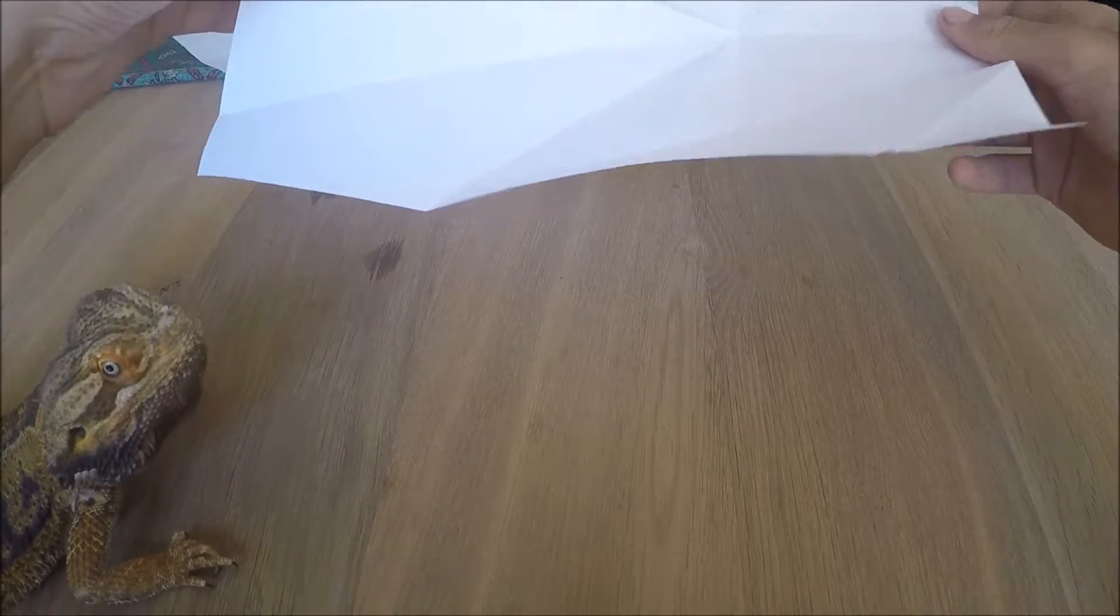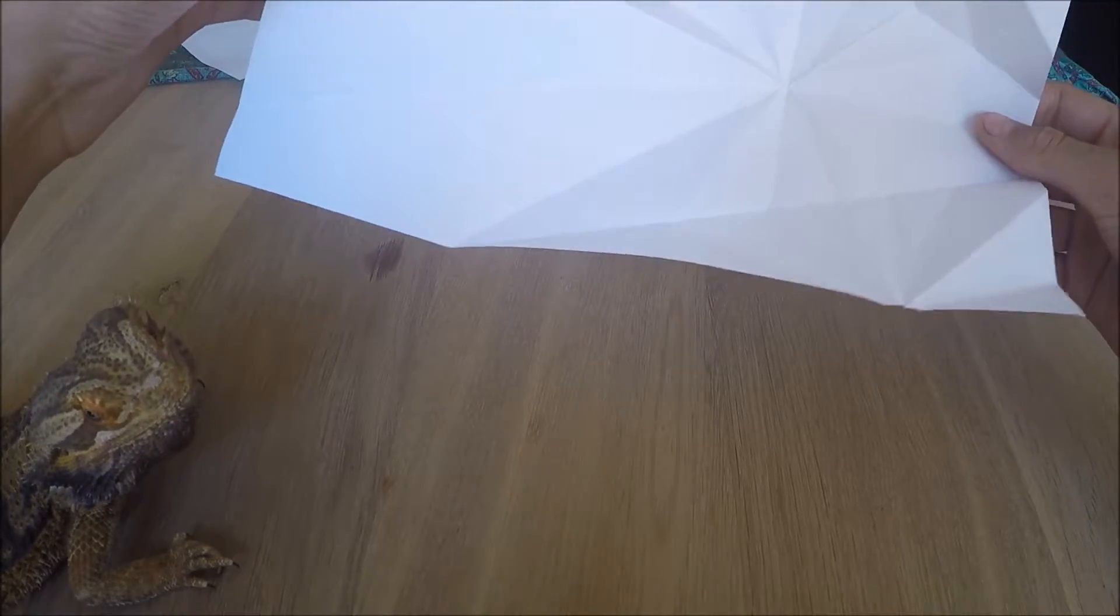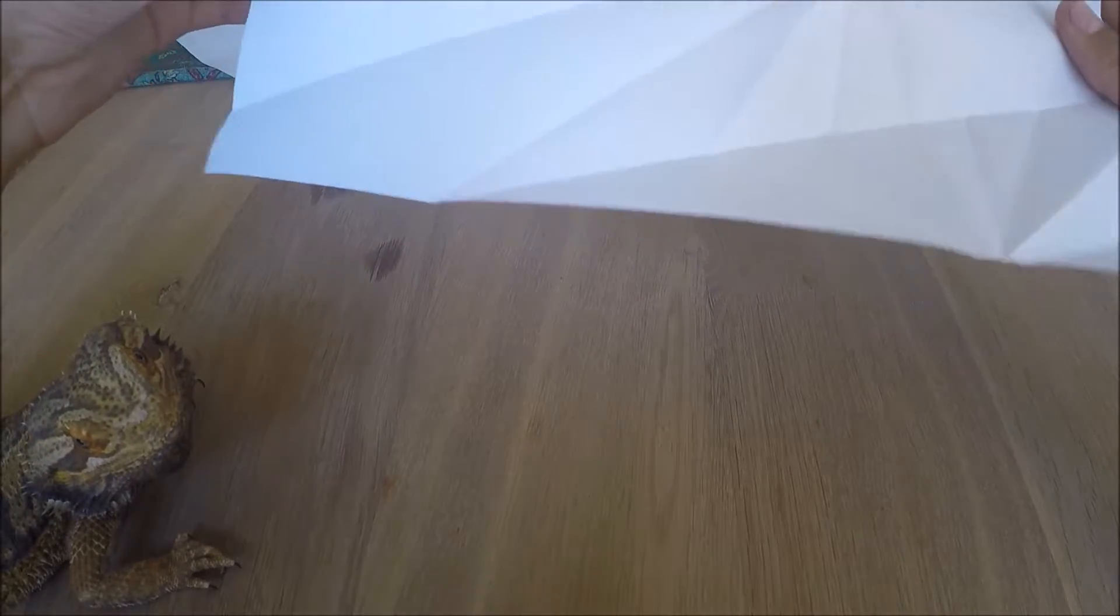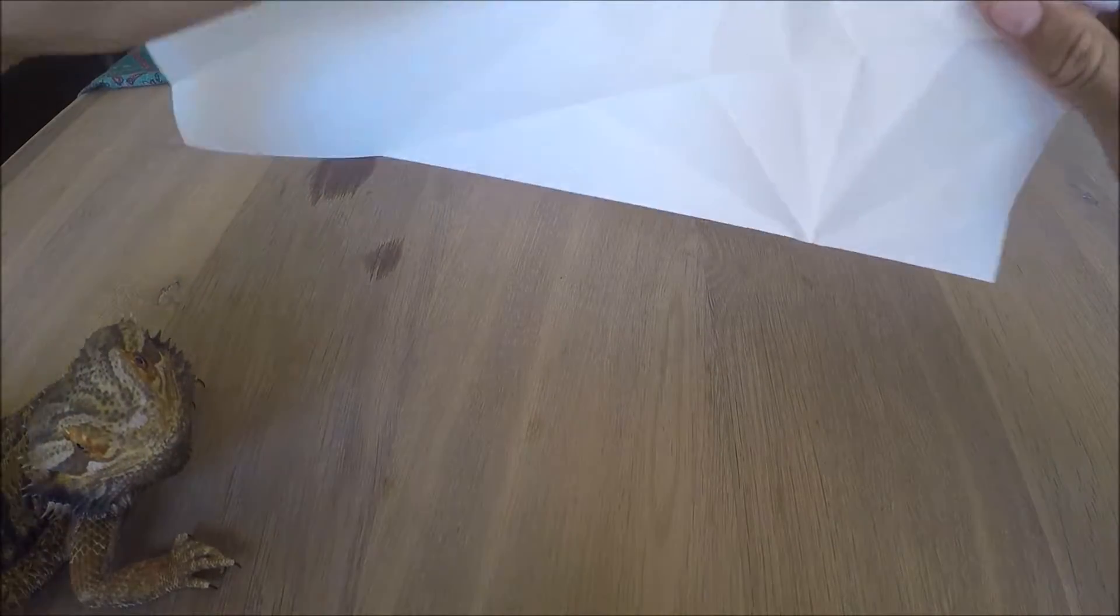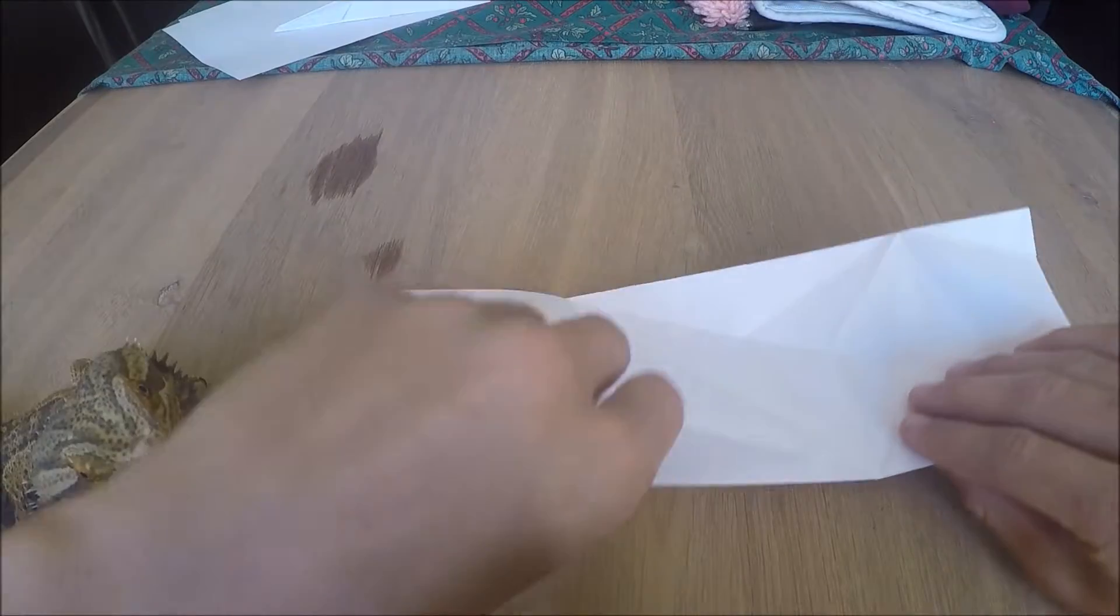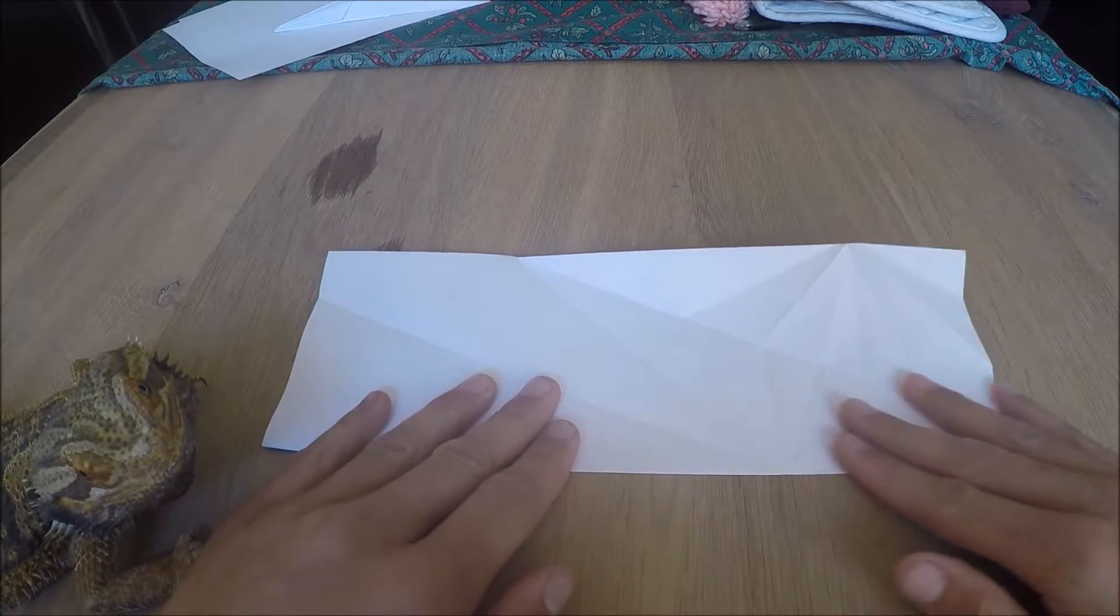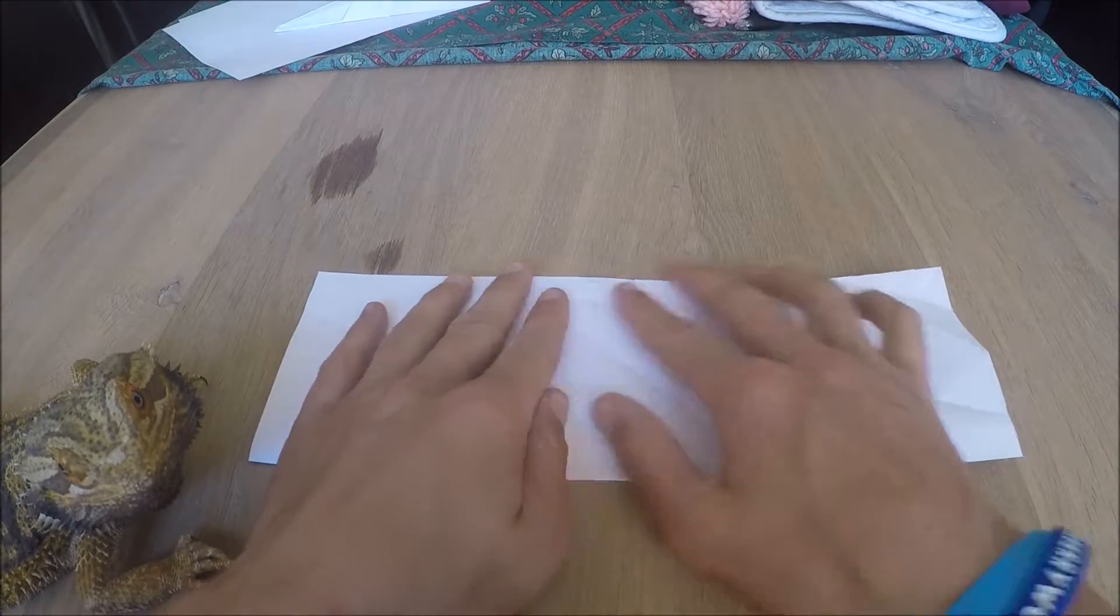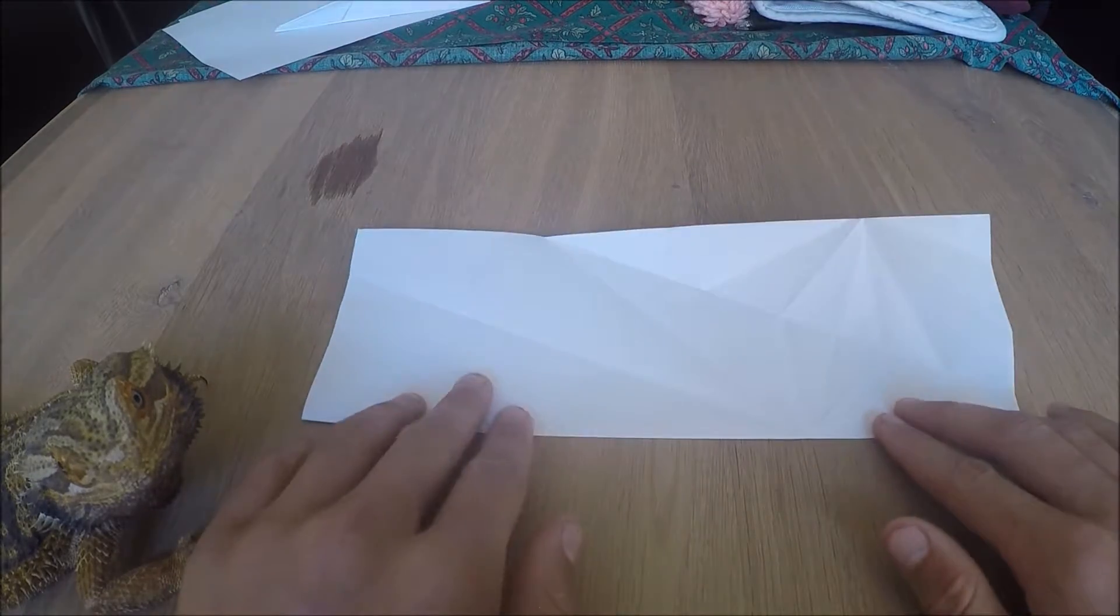I've pre-folded this just so it's a bit easier while I'm making it for the video. The first thing you need to do, like with most paper airplanes, is make a fold down the middle. Touch the two corners at the top and then fold down the middle. That's the first step.